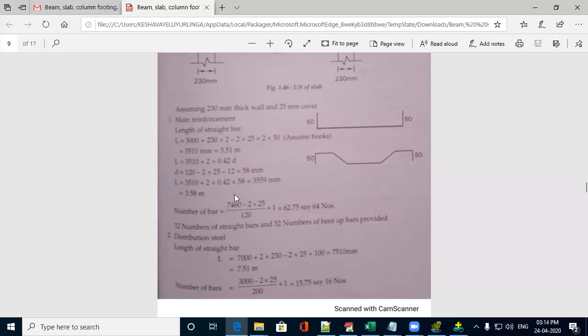For that 7 meter, we have to add the support thickness. That is 7000 plus 230 plus 230 that comes to 7460 minus 2 times the cover divided by spacing. That is 120 plus 1. If you work out,